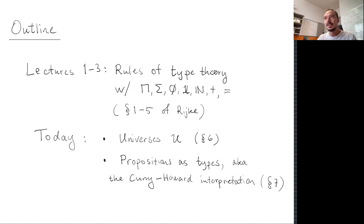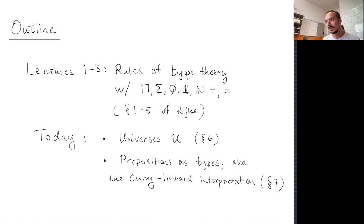Hello everyone and welcome to the fourth homotopy type theory lecture in the HoTT summer school of 2022. Today it is my pleasure to introduce Ulrich Buchholz. He holds a position at the University of Nottingham and his interests range from proof theory to univalent mathematics. He is a co-author of the forthcoming Symmetry book, does formalization of mathematics, synthetic homotopy theory, and the list goes on.